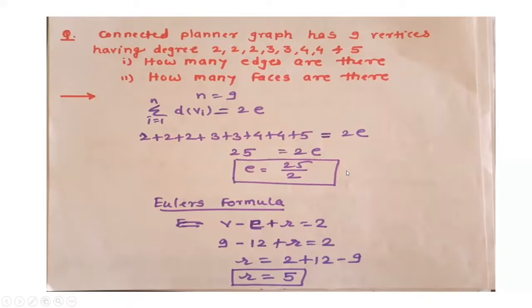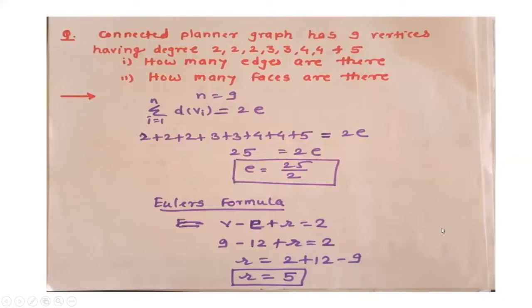For Euler's formula, the formula is v minus e plus r equals 2. The number of vertices are 9 and the number of edges is approximately 12. So 9 minus 12 plus r equals 2. Therefore r equals 2 plus 12 minus 9, which gives r equals 5. So the number of regions is 5.